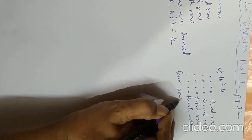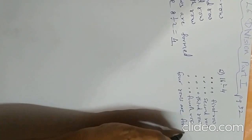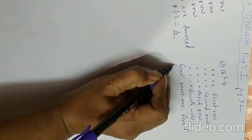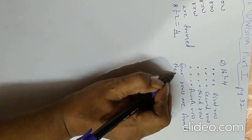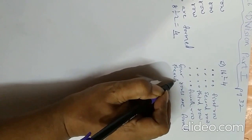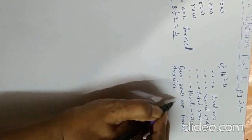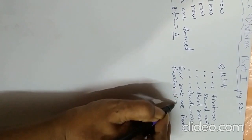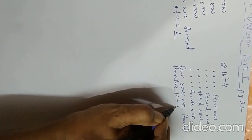So how many rows are formed? Four rows are formed. Therefore, 16 divided by 4 is equal to 4. That is the answer.